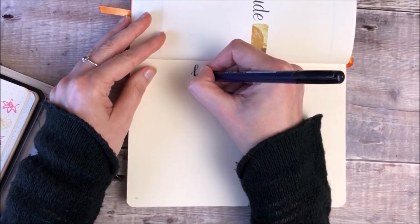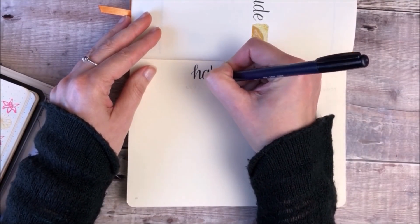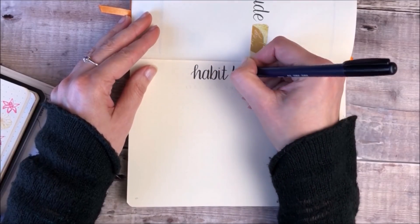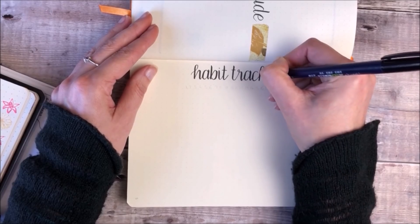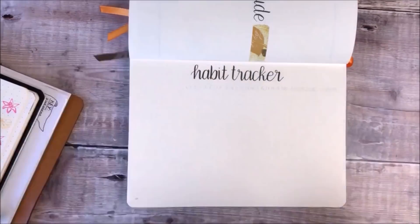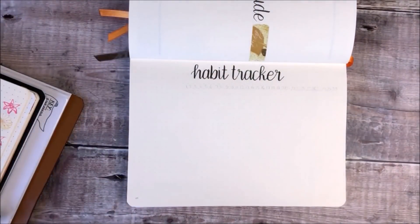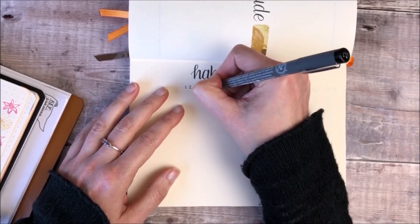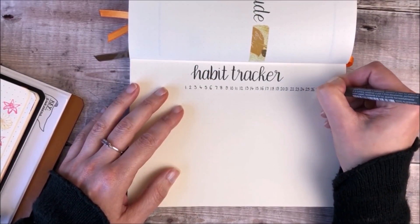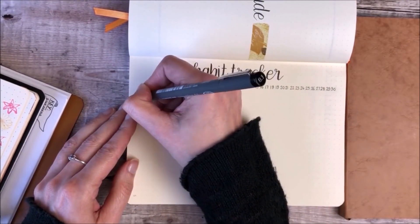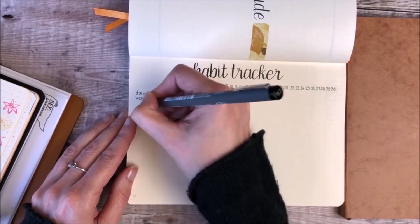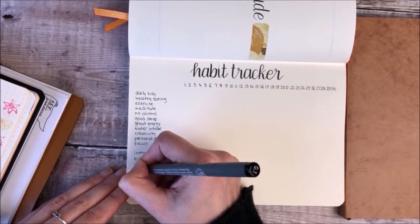I like to turn my book around for the habit tracker because it means that I can write all of the dates of the month along the top of the page. I complete my gratitude log and my habit tracker every evening, so that's become part of my routine to sit down and make sure that I fill those out. I usually add roughly one line to the gratitude log every day.